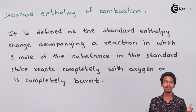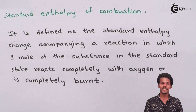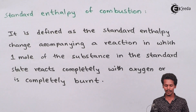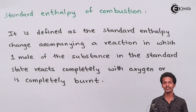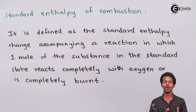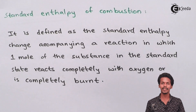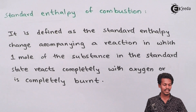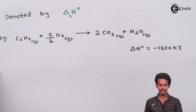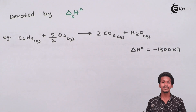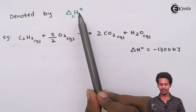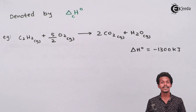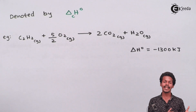To burn or make a substance undergo combustion, oxygen is the main component required. One mole of the substance reacts with oxygen, and the substance gets oxidized or burned. The enthalpy change observed during this combustion process is known as the standard enthalpy of combustion. It is denoted as ΔH°c, where H° refers to standard states, so it is called the standard enthalpy of combustion.